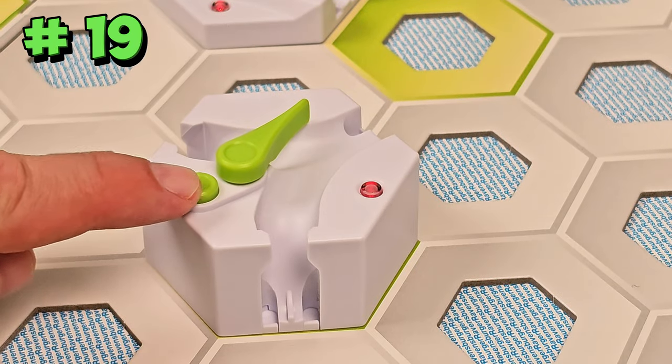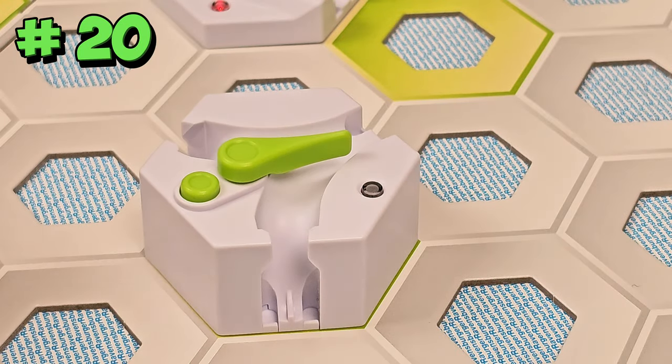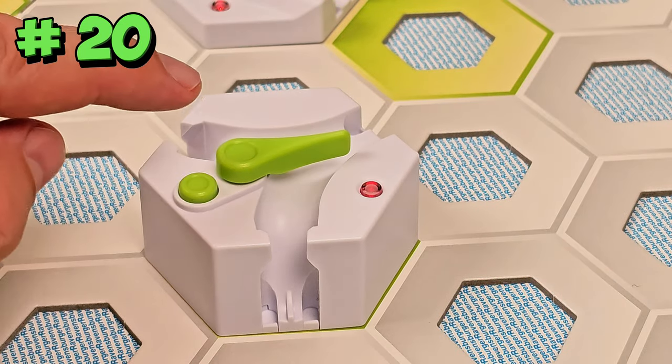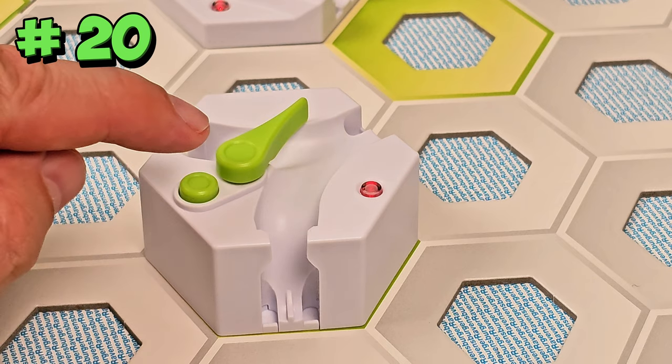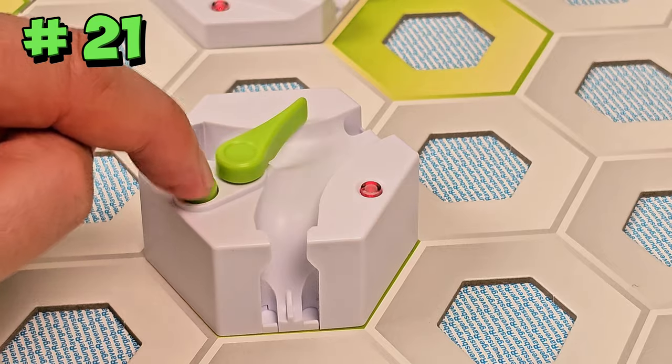The switch can also be turned back on by pressing the green switch button. When the power switch is turned off, the first press of the green button will only turn it back on, not toggle the switch. Once the power switch is turned on, pressing the green button will toggle the switch.